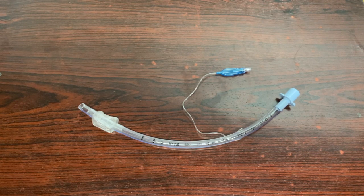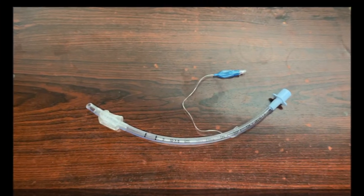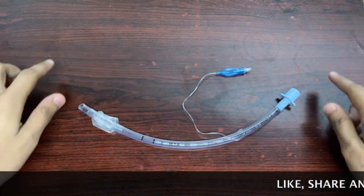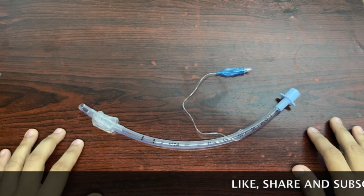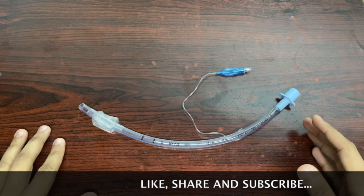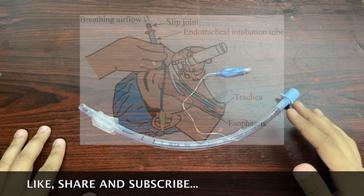Hello everyone, today we'll be talking about the cuffed endotracheal tube. This specific instrument is provided in a plastic sealed bag which is pre-irradiated with gamma radiation, indicating that this instrument is a single-use instrument and has already been sterilized by the manufacturers.